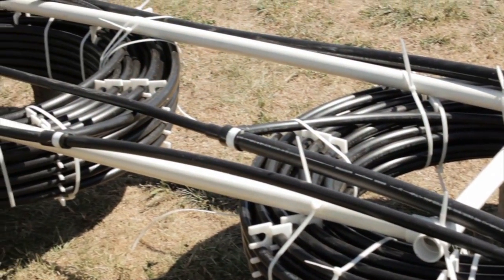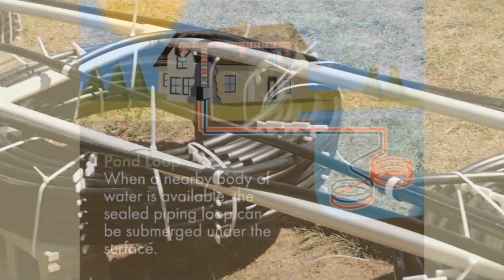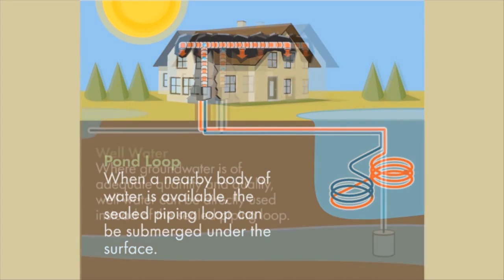If a nearby pond or lake is available, a coiled loop system can be used. This is the fastest, easiest loop system to install.